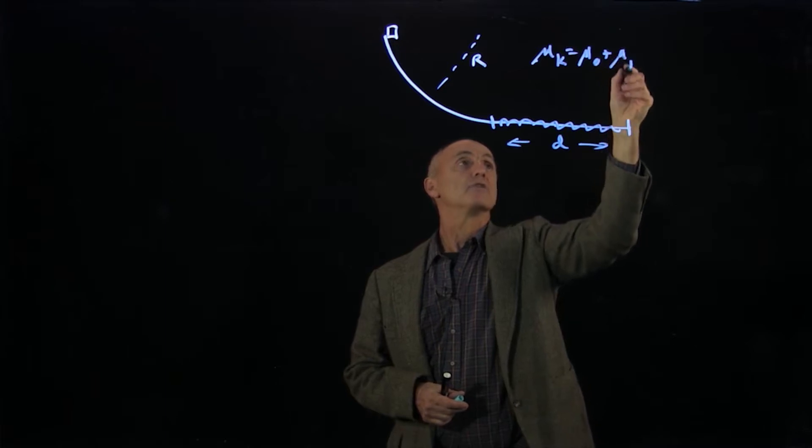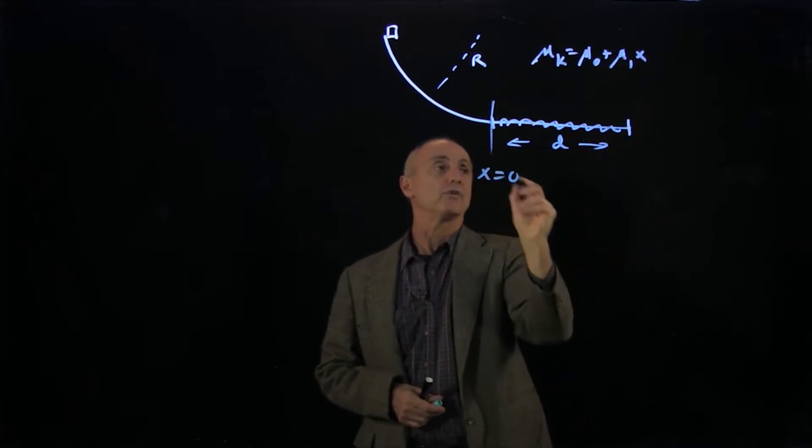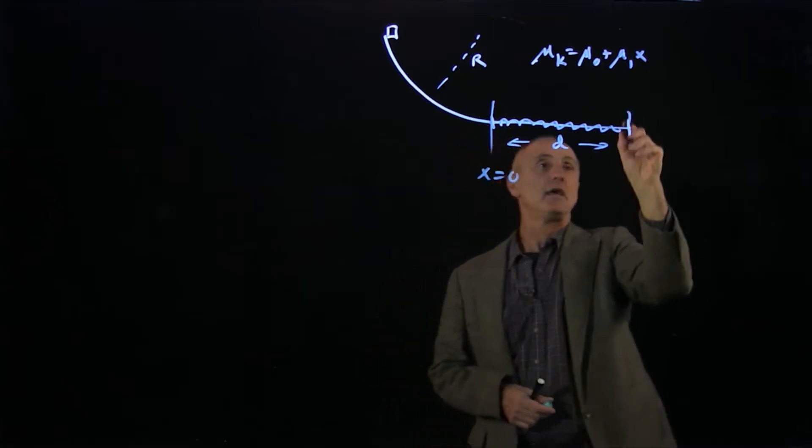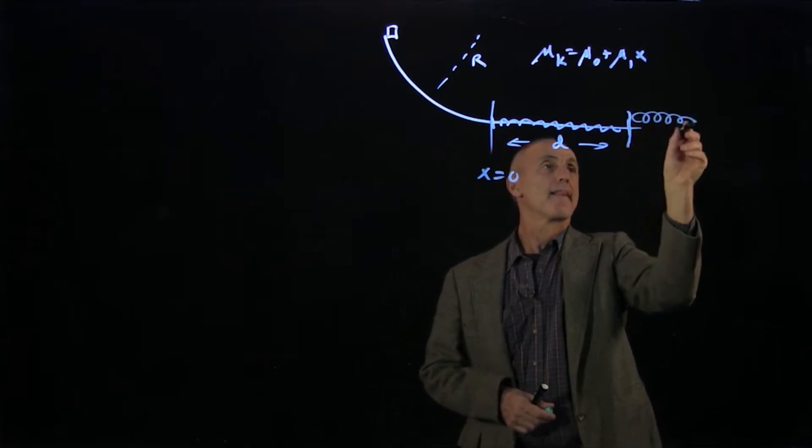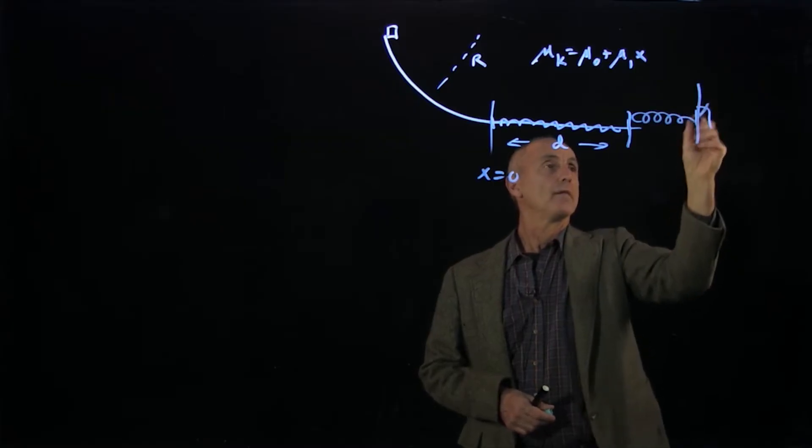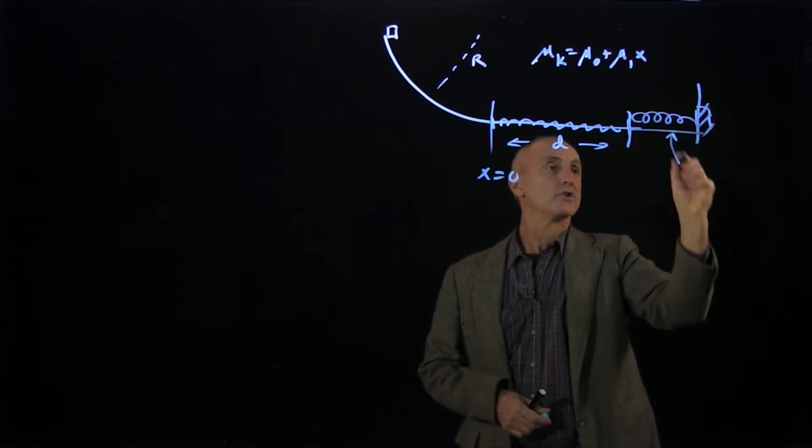So we'll write it as mu naught and mu1x. We'll take x equals 0. And then here there's a spring and a wall.